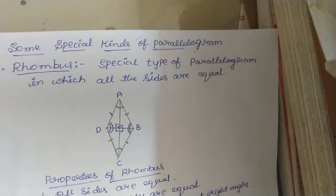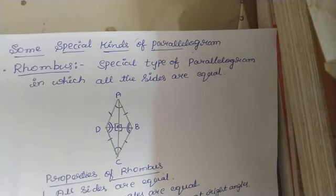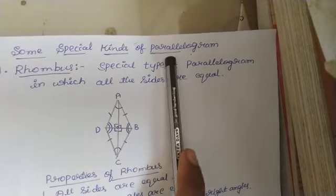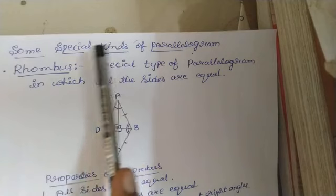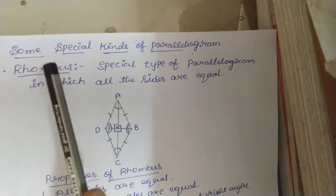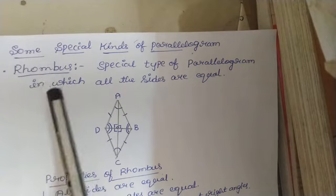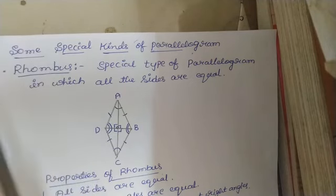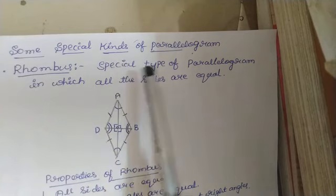The next quadrilateral is some special kinds of parallelogram. These are the quadrilaterals which come under the parallelogram, or the types of parallelogram. They are rhombus, rectangle, and square.